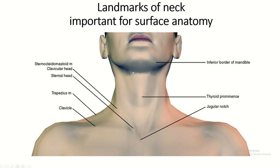Some important landmarks of the neck: the inferior border of the mandible, hyoid bone, Adam's apple, thyroid prominence, then cricoid cartilage, then jugular notch, sternal head of the sternocleidomastoid muscle, clavicular head of the sternocleidomastoid, this is the clavicle, and this is the trapezius.